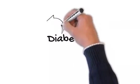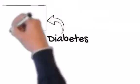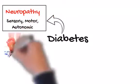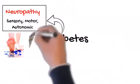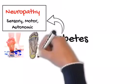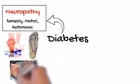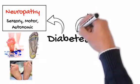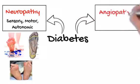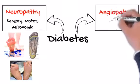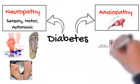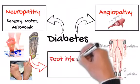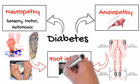Diabetes causes two main problems. The first one is neuropathy — sensory, motor, or autonomic. Sensory neuropathy causes loss of pain sensation, and motor neuropathy causes abnormalities in the small muscles of the foot, causing deformity. The other problem is angiopathy, which is either microangiopathy or macroangiopathy. Both neuropathy and angiopathy can cause foot infection.